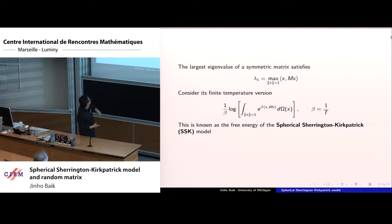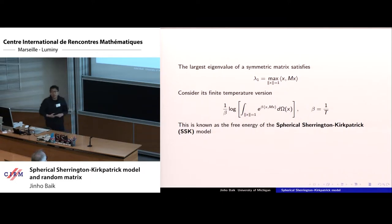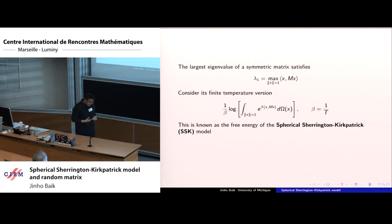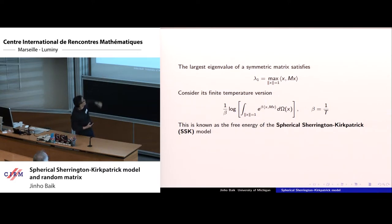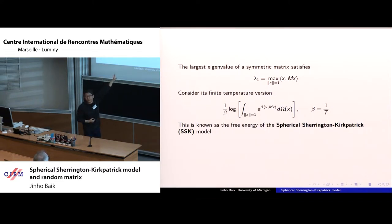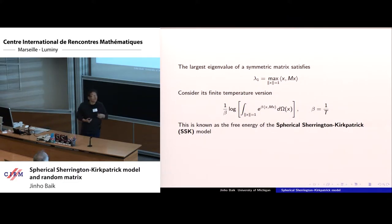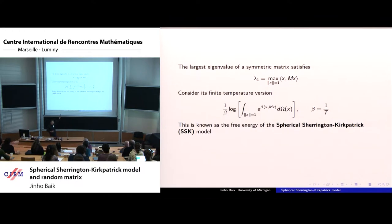Think about the following finite temperature version. You look at the same quadratic form x^T Mx, put that as a Hamiltonian, raise e to the beta times that Hamiltonian, integrate over the sphere, take the log, and divide by one over beta. If you take beta to infinity — where beta is like one over temperature, so zero temperature corresponds to beta to infinity — the main contribution comes from where the quadratic form takes its largest value, which is the eigenvector corresponding to the largest eigenvalue. The log divided by one over beta gives back the largest eigenvalue. So the limit as beta goes to infinity is the largest eigenvalue of M.